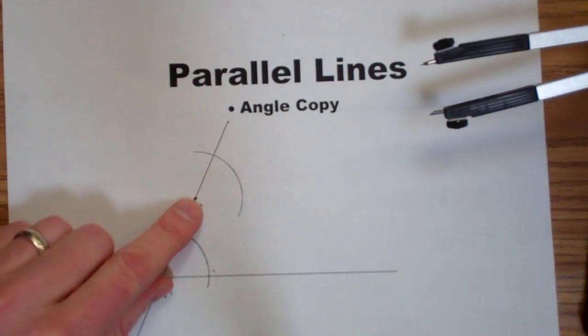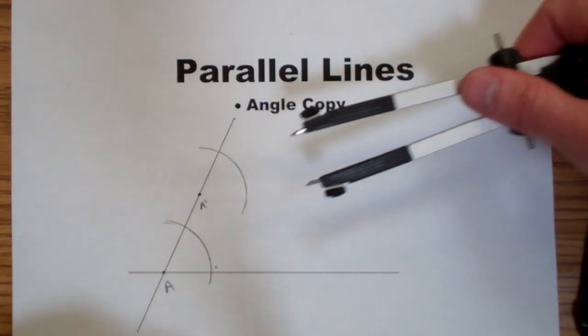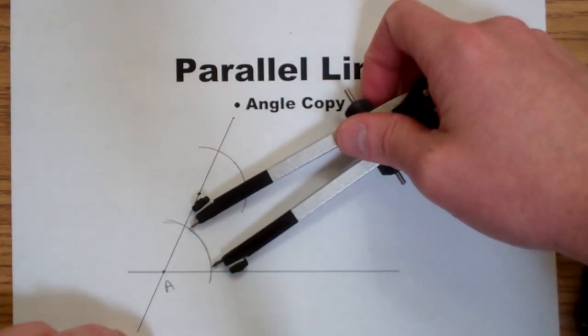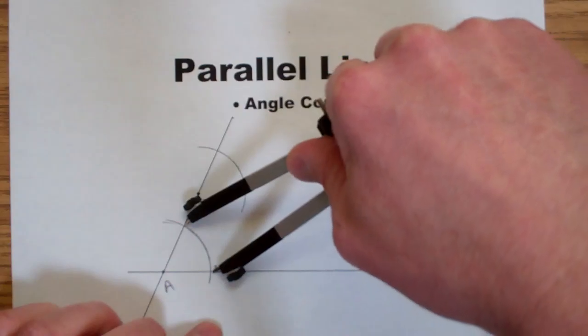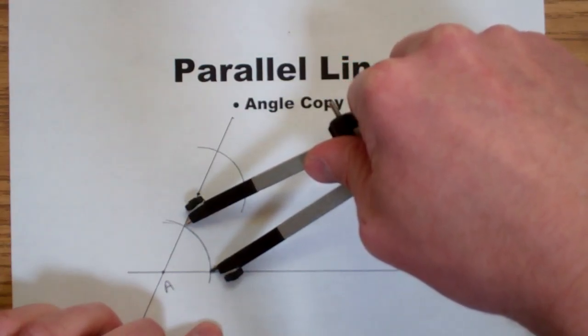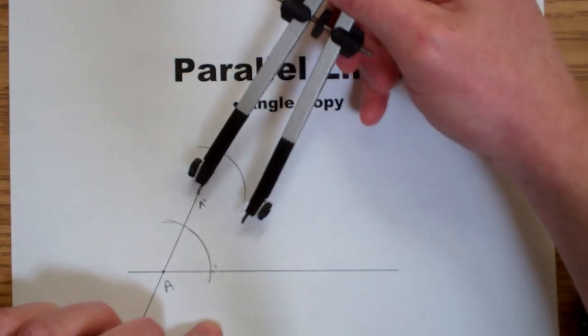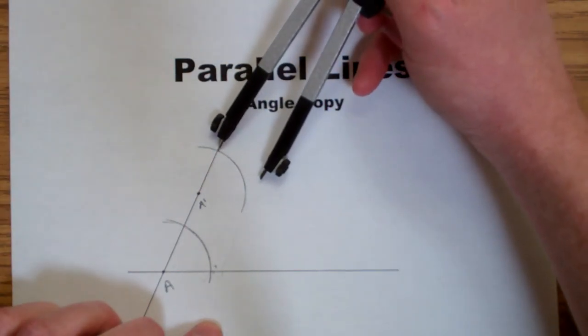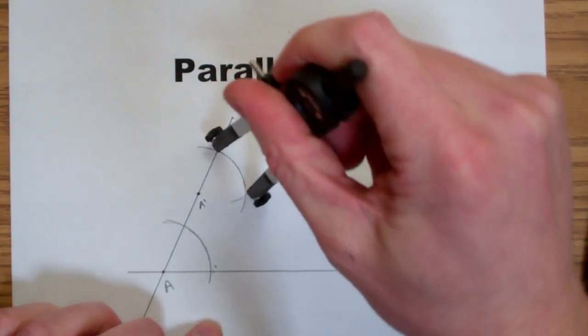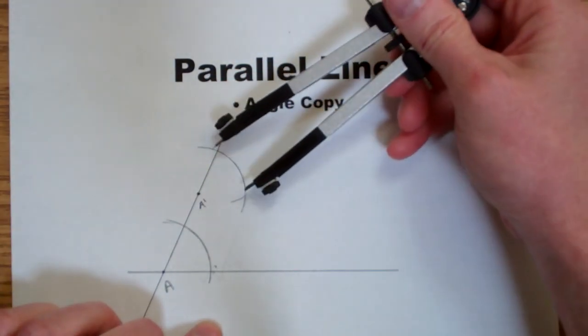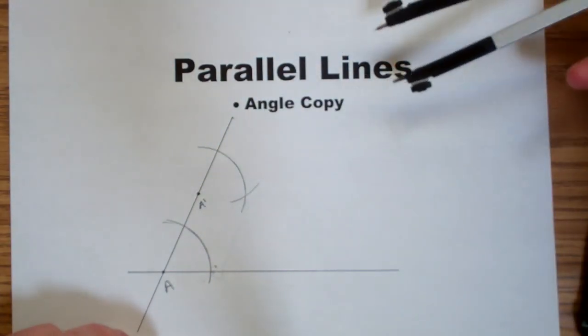I have one of the points of the parallel line, point A, but to get the other point, I need to measure the distance between the intersections on the original angle, set my compass, and then transfer that distance along the transversal to this intersection here, making a new intersection so that this distance and this distance are the same.